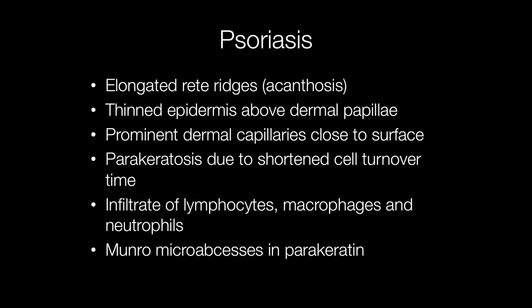The histopathological features of psoriasis include elongated rete ridges, also known as acanthosis. The rete ridges are the ridges of epidermis that poke down into the underlying dermis. Between the rete ridges are the dermal papillae, and the epidermis above the dermal papillae is thinned — this is known as suprapapillary thinning.